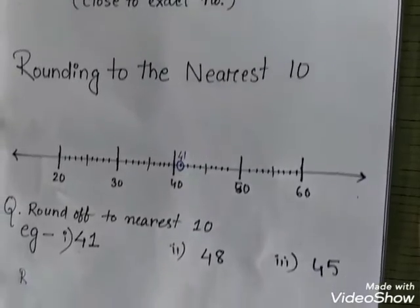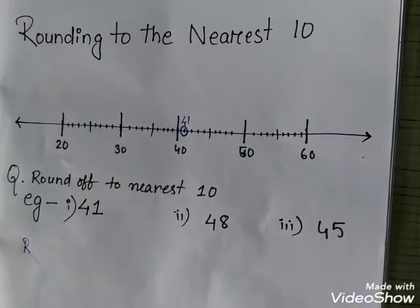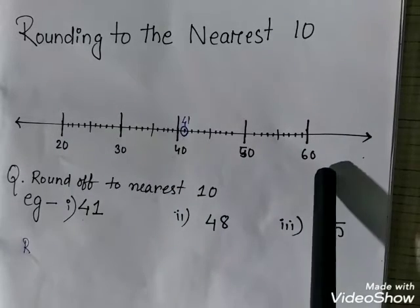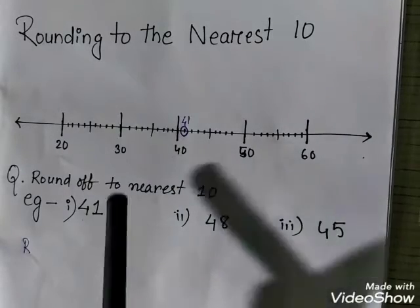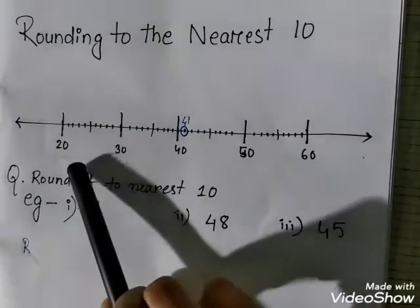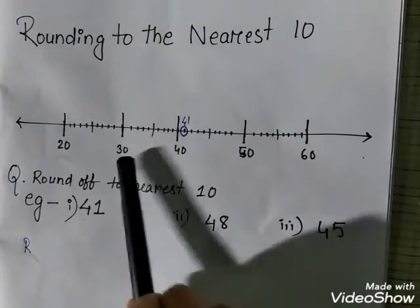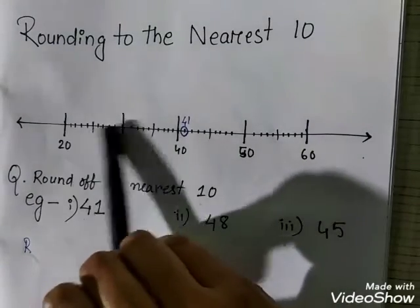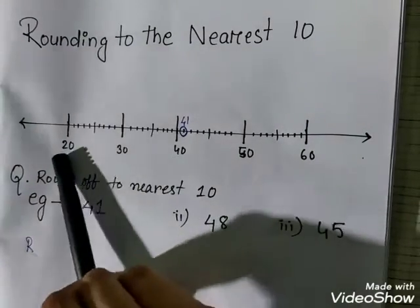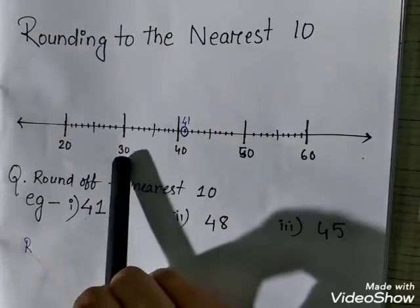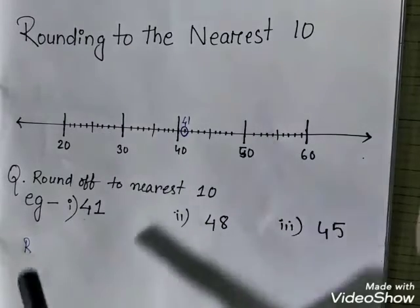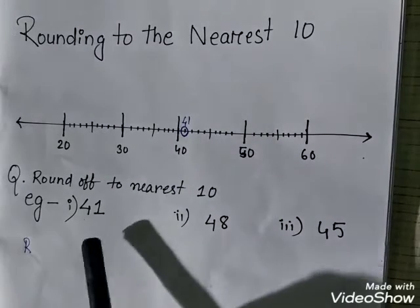Now, rounding to the nearest 10. I have drawn a number line here. On this number line I have written 20, 30, 40, 50, 60 — this is a tens number line, representing two tens, three tens, four tens, five tens, and six tens. Between each pair, such as 20 to 30, the small lines represent 21, 22, 23, 24, and so on.